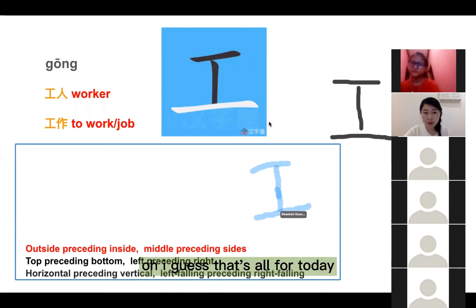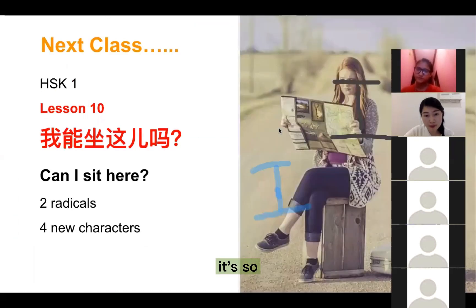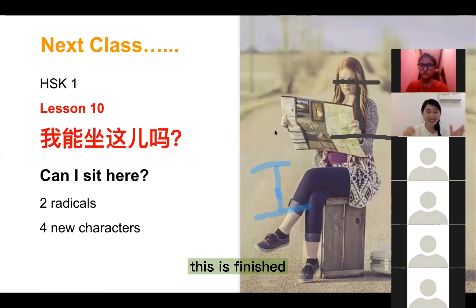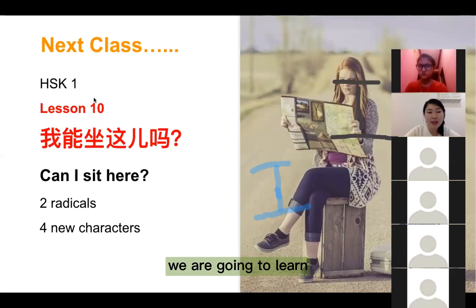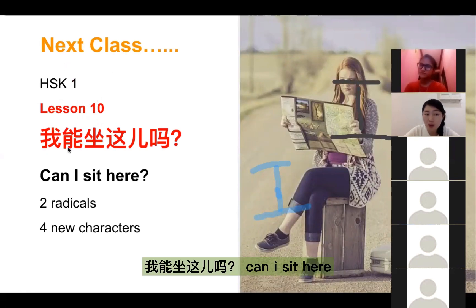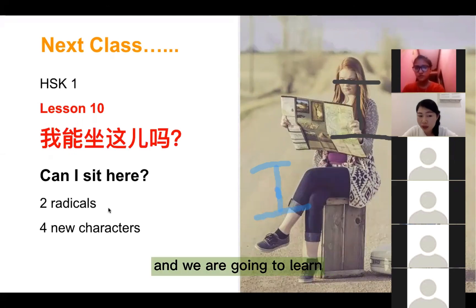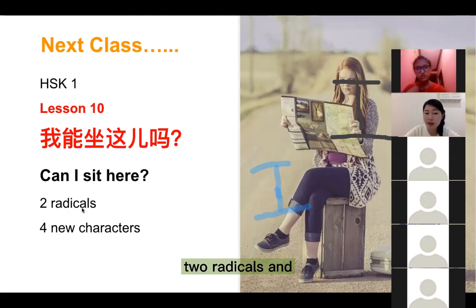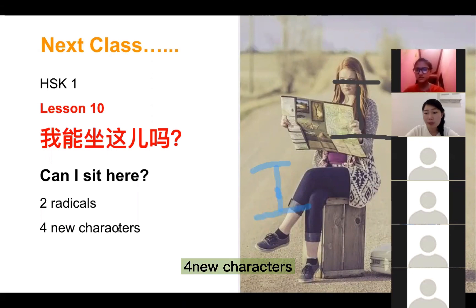I guess that's all for today. Next class we are going to learn this sentence: 我能坐这儿吗? Can I sit here? And we are going to learn two radicals and four new characters.